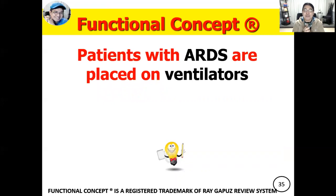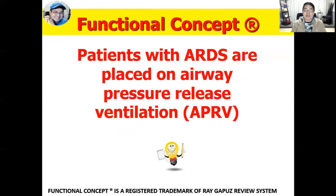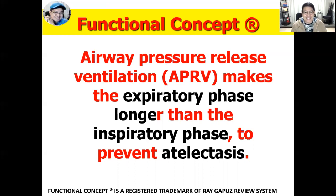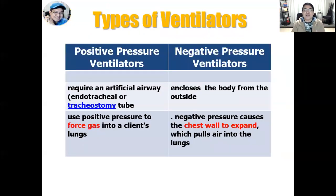Remember this functional concept: patients with ARDS are placed on ventilators and specifically on airway pressure release ventilation — the APRV mode — used for rescuing patients in respiratory distress. APRV makes the expiratory phase longer than the inspiratory phase to prevent atelectasis and prevent retention of carbon dioxide, thereby helping prevent respiratory acidosis. In essence, APRV facilitates excretion of excess CO2 and prevents collapse of the lungs.